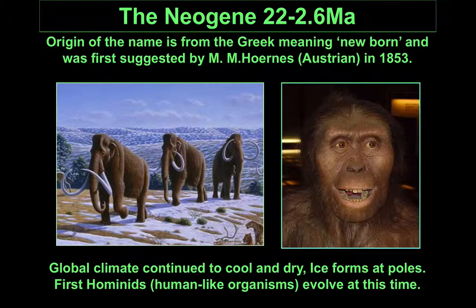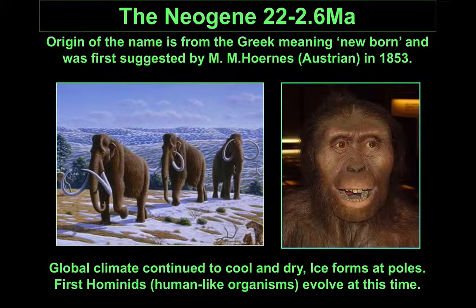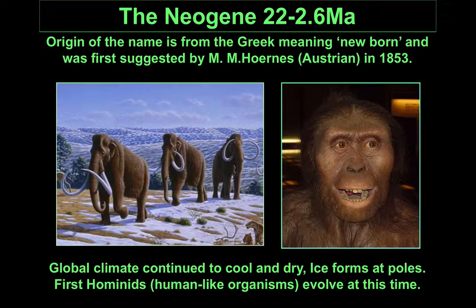This continued through into the Neogene, where we start to see even colder climates, with polar ice caps forming. Towards the end of the Neogene we even get the first hominids — our own ancestors.